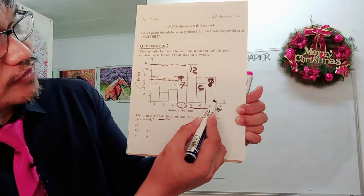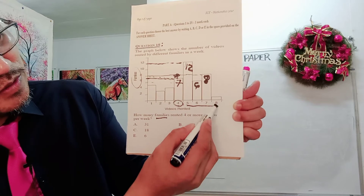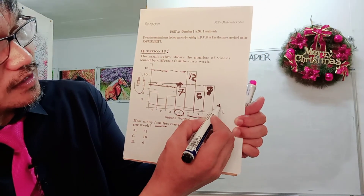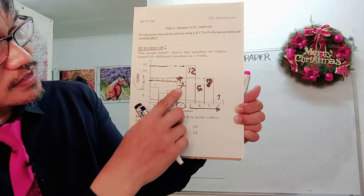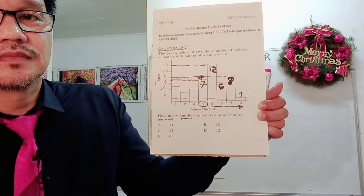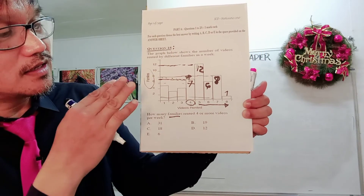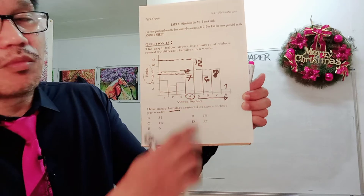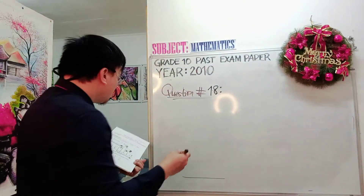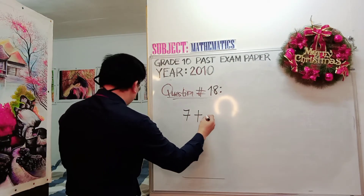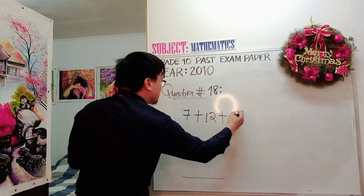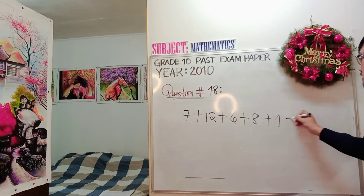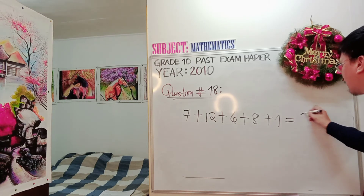For eight videos, the bar is in the middle of zero and two, so that is one family. Now you add all these values: seven plus 12 plus six plus eight plus one, which gives the total number of families that rented four or more videos.